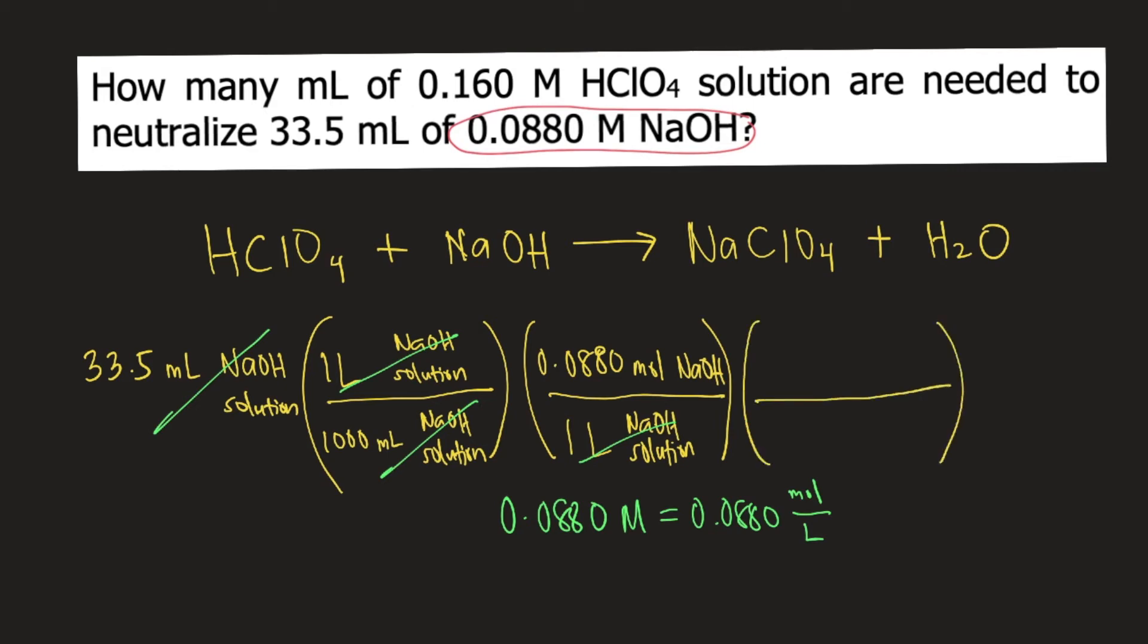Looking at our balanced equation, we can see the relationship between the perchloric acid and NaOH. It says here that 1 mole of perchloric acid reacts with 1 mole of NaOH. So you write that into your conversion. 1 mole of NaOH reacts with 1 mole of perchloric acid. So moles of NaOH will cancel. Now you have moles of perchloric acid.